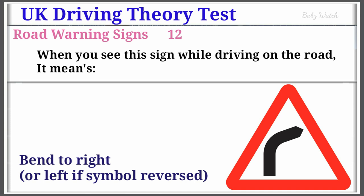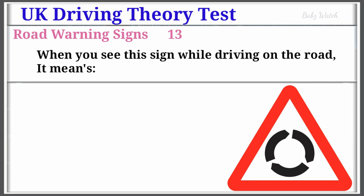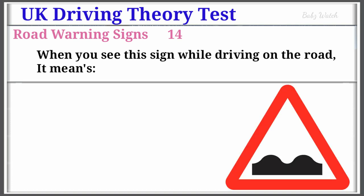UK Driving Theory Test Road Warning Sign Number 13: When you see this sign while driving on the road, it means Roundabout. Warning Sign Number 14: When you see this sign while driving on the road, it means Uneven Road.